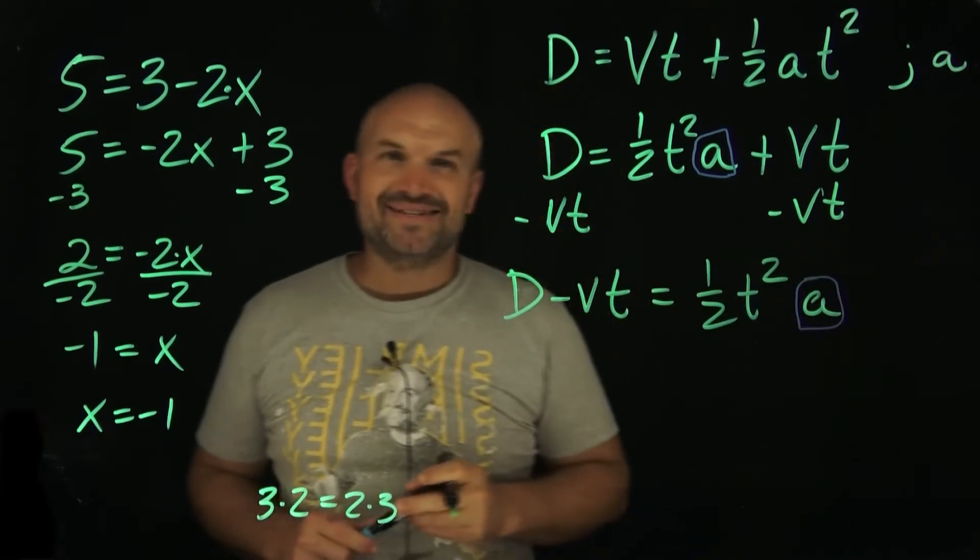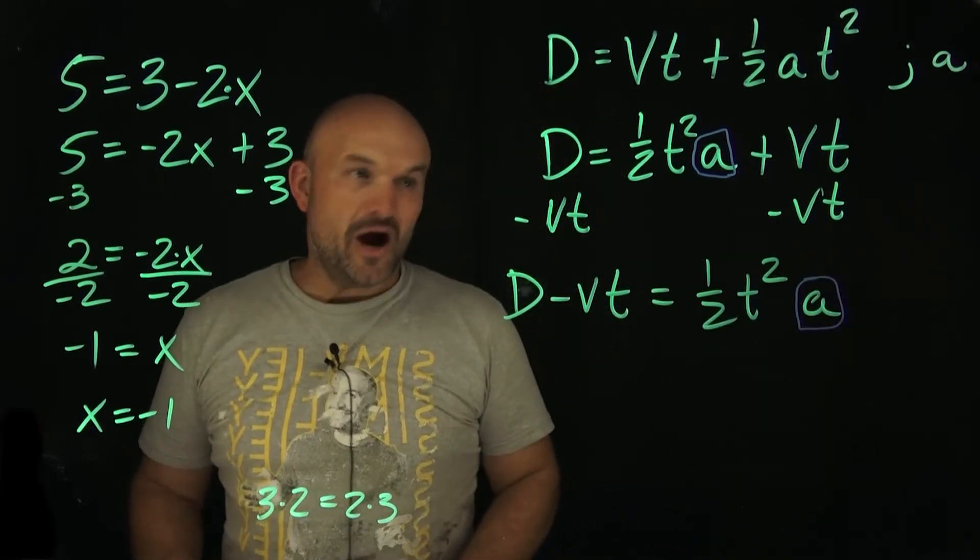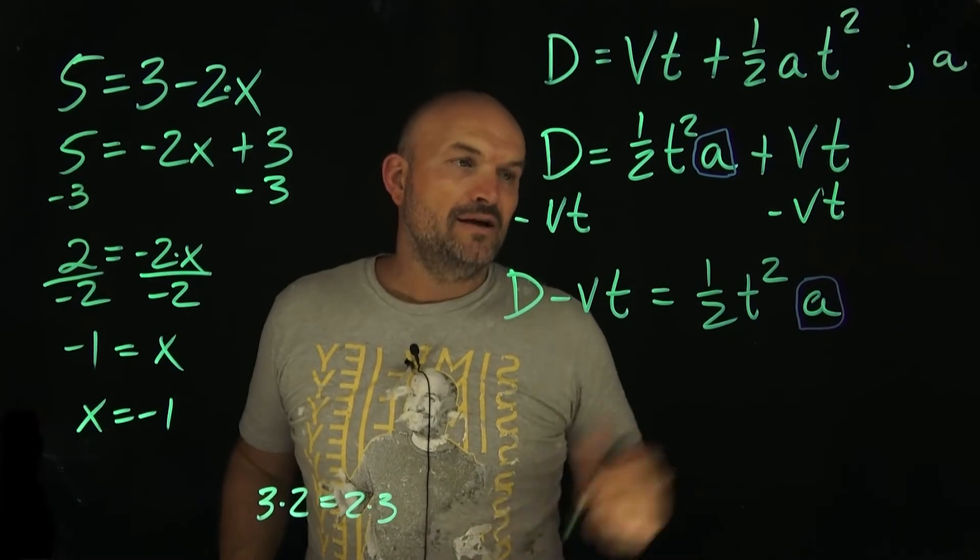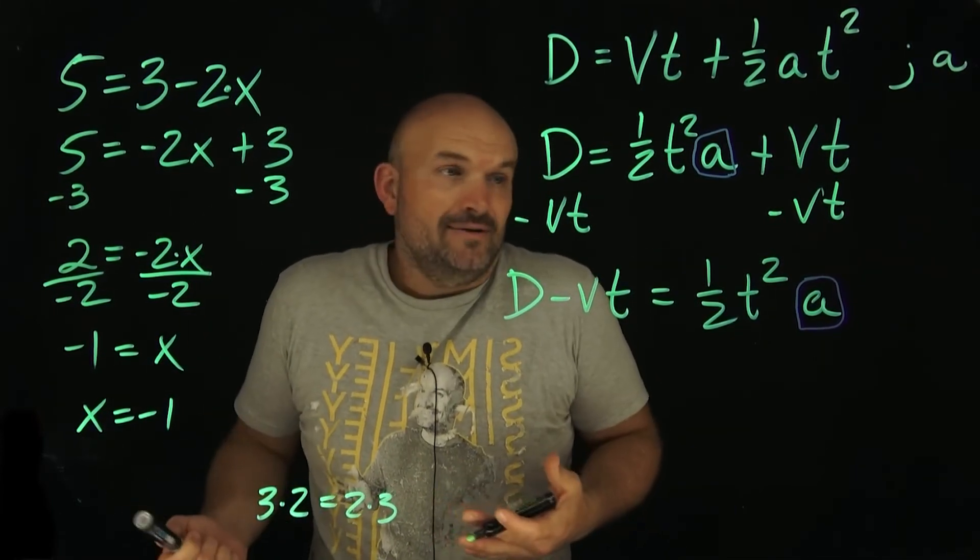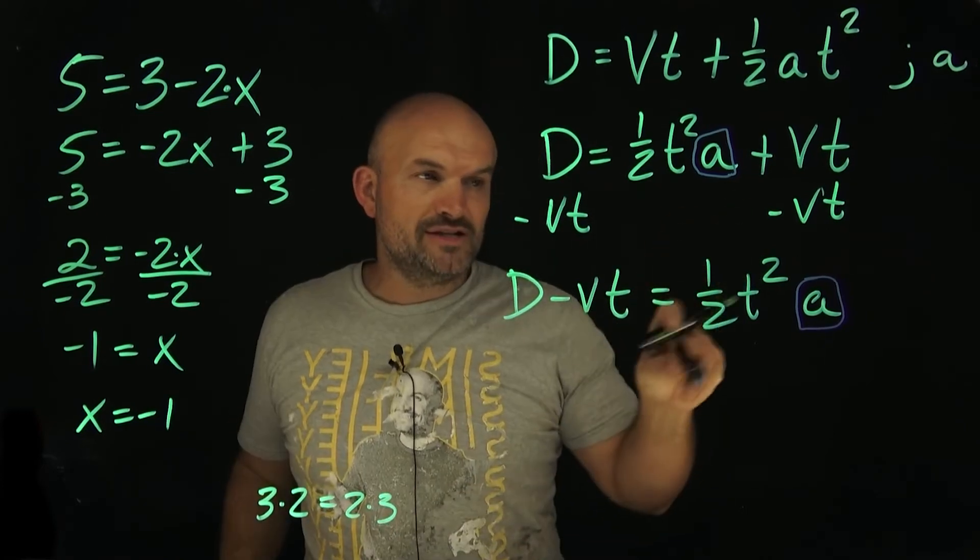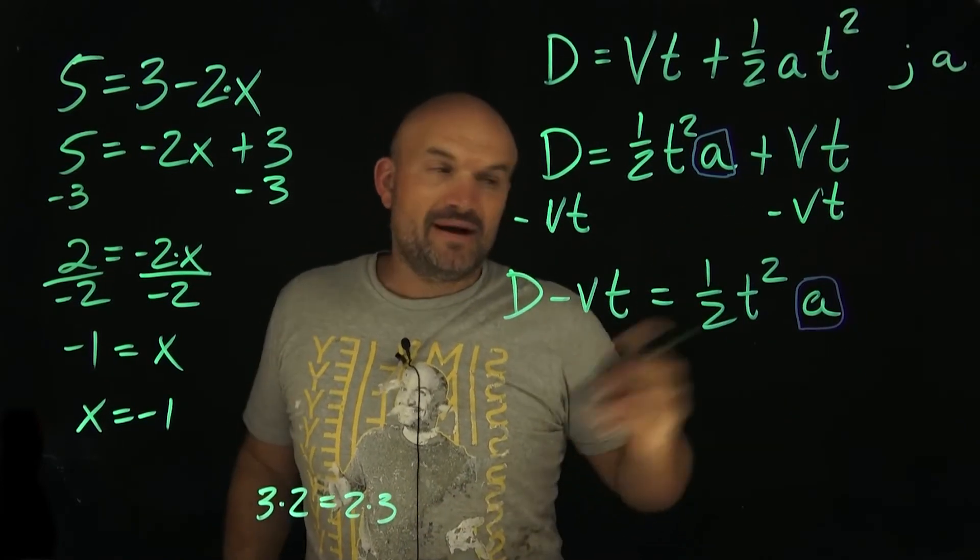All right, I'll put that nice little box error on there again. And now we just need to say, all right, now what is being applied to my a? Well, now we have our multiplication. And again, what do we do with our multiplication? We use the inverse operation. We divide, right? So we're going to undo multiplication of 1 half and t squared by dividing by 1 half t squared.